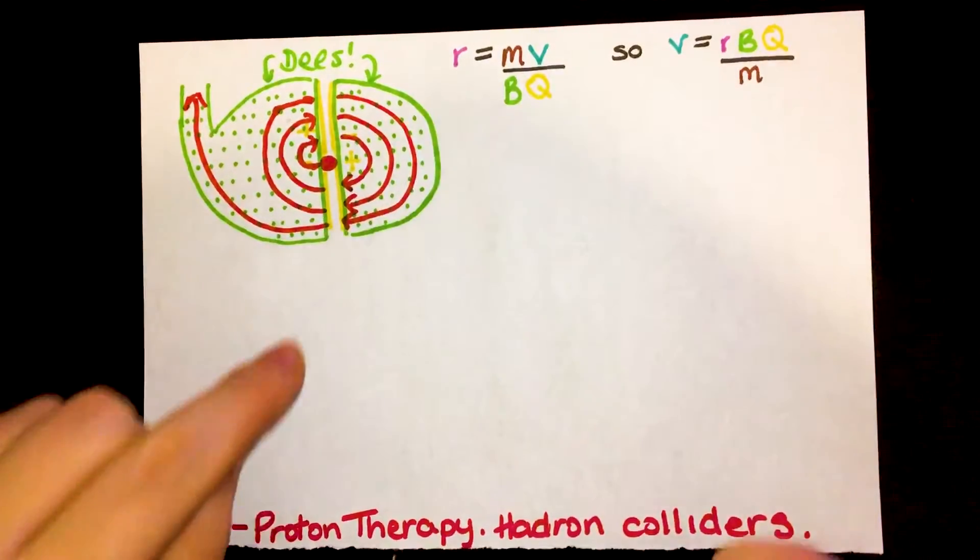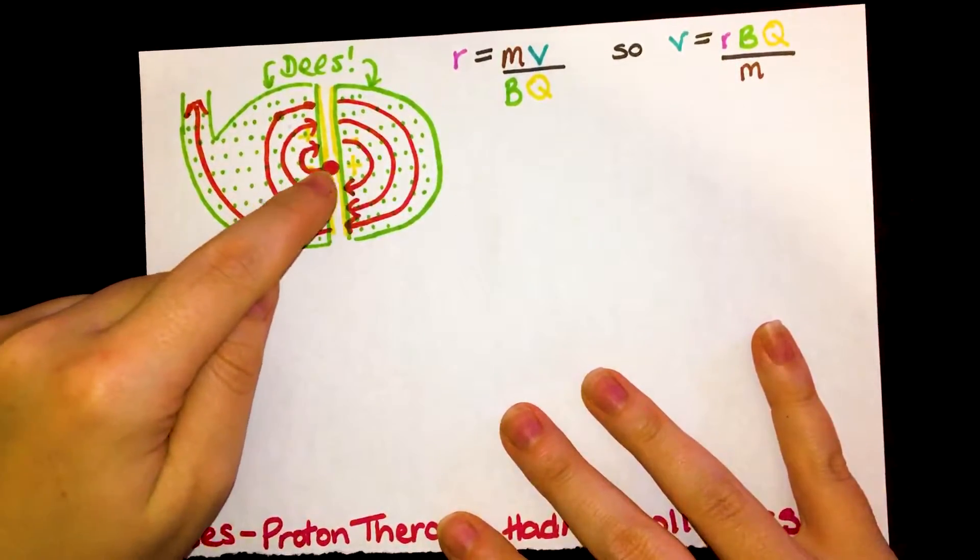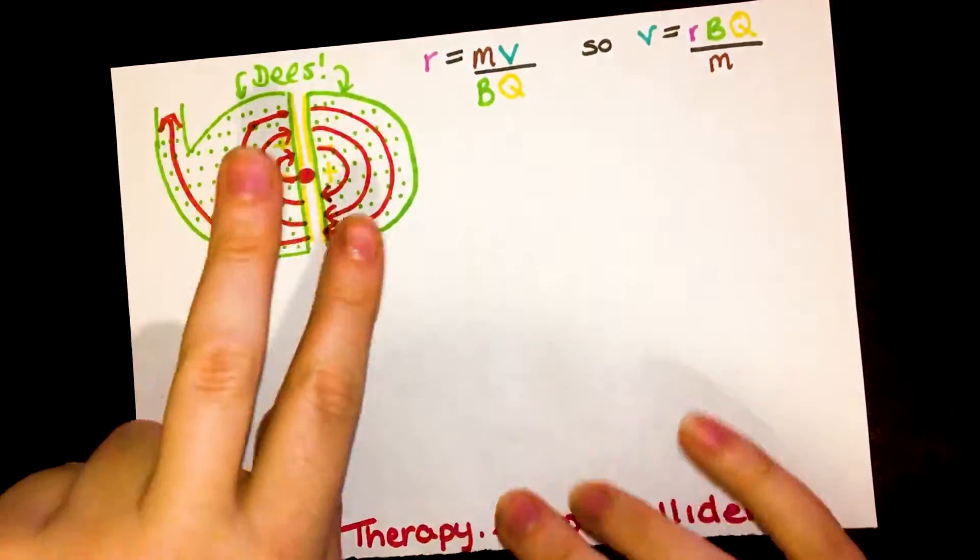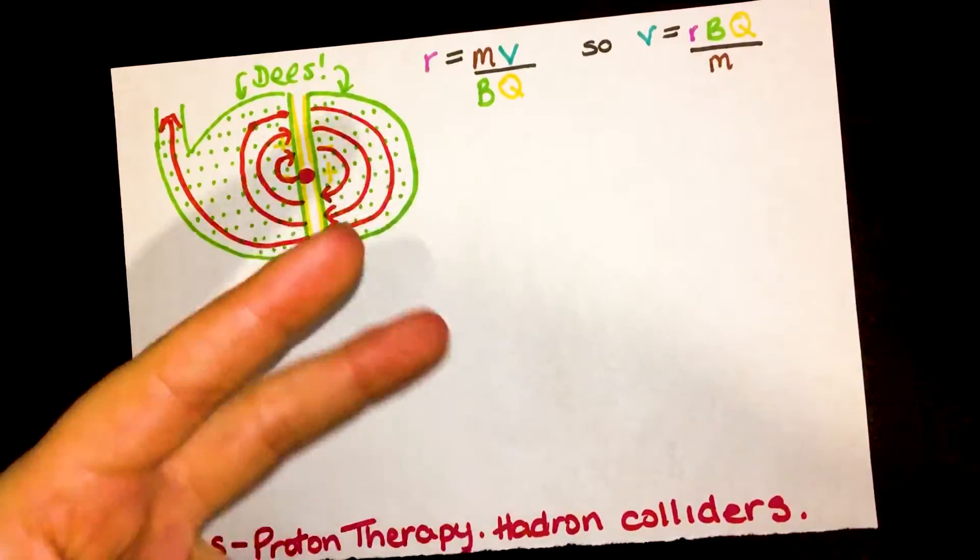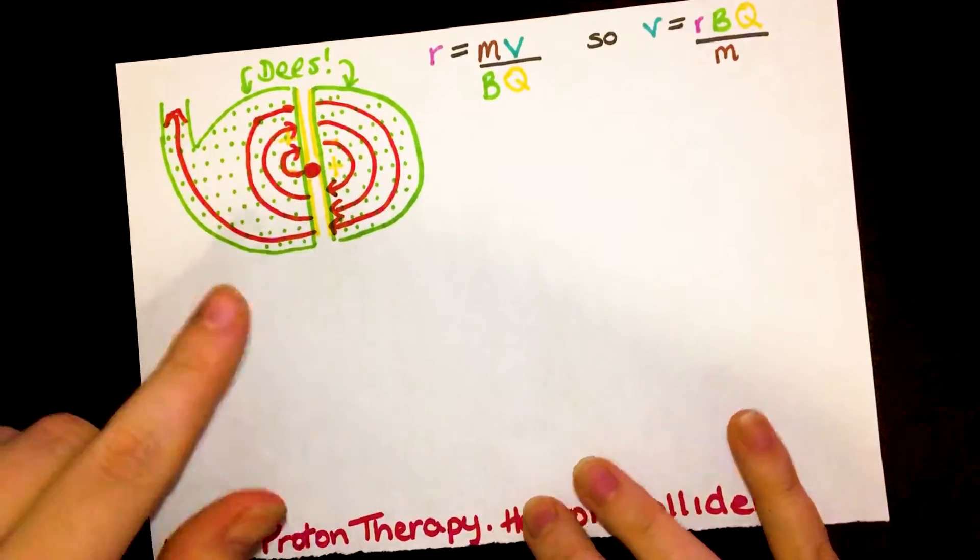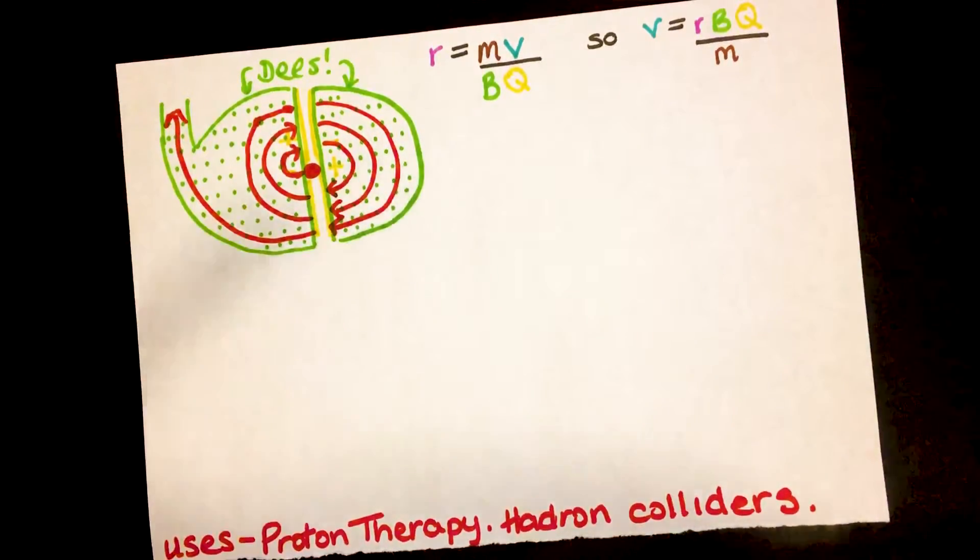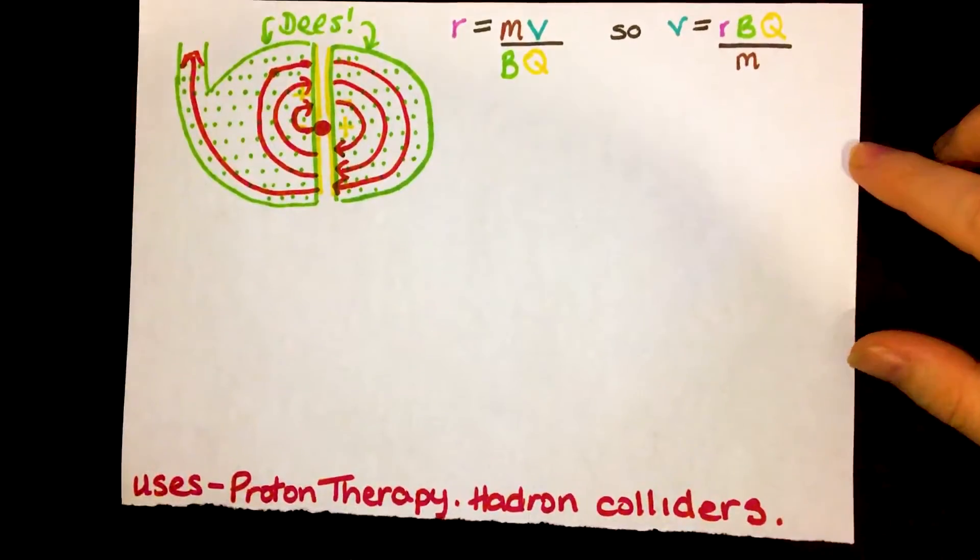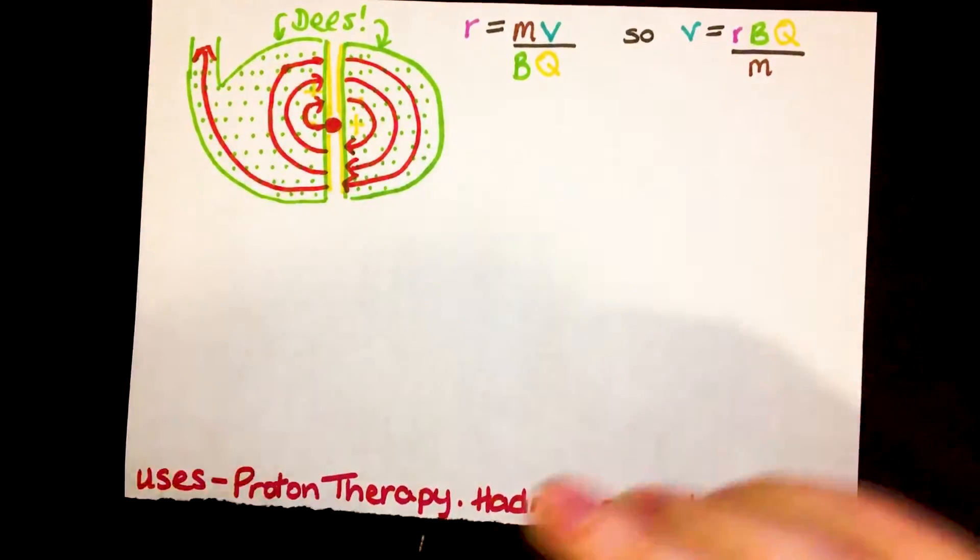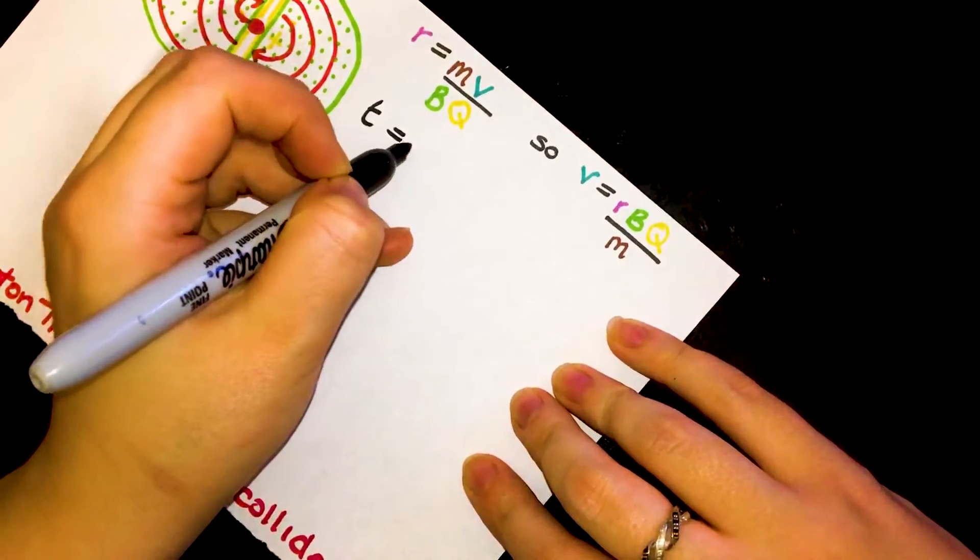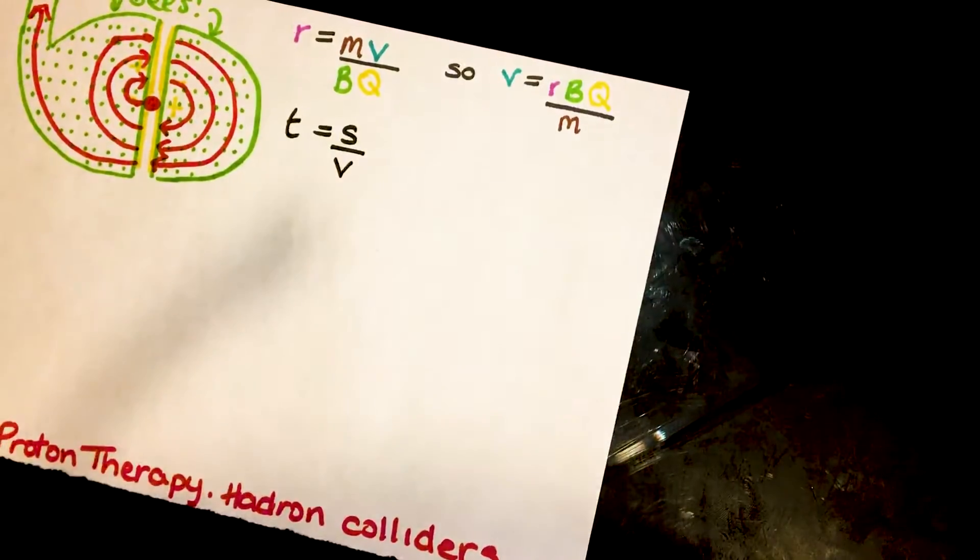So if this is to happen, the frequency in which the protons pass across that gap has to match the frequency in which the charges are flipping on the D like this, so going from positive to negative and back over and over again. So to do this, we obviously know that speed is distance divided by time, which means time is distance divided by speed.